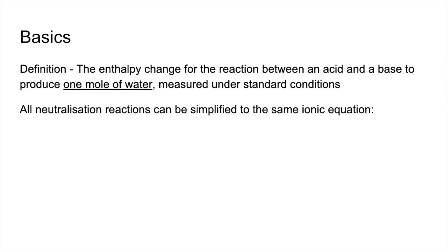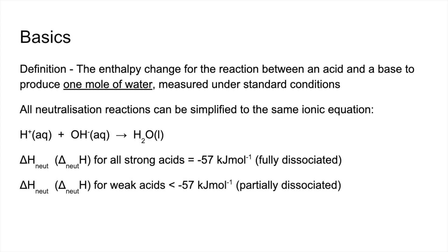All neutralizations can be simplified to the same ionic equation, and as a result of that, delta H neutralization for all strong acids is minus 57 kilojoules per mole. That's because they're all fully dissociated. If you've got a weak acid, it's going to be less than minus 57 kilojoules per mole, and that's because they are only partially dissociated.